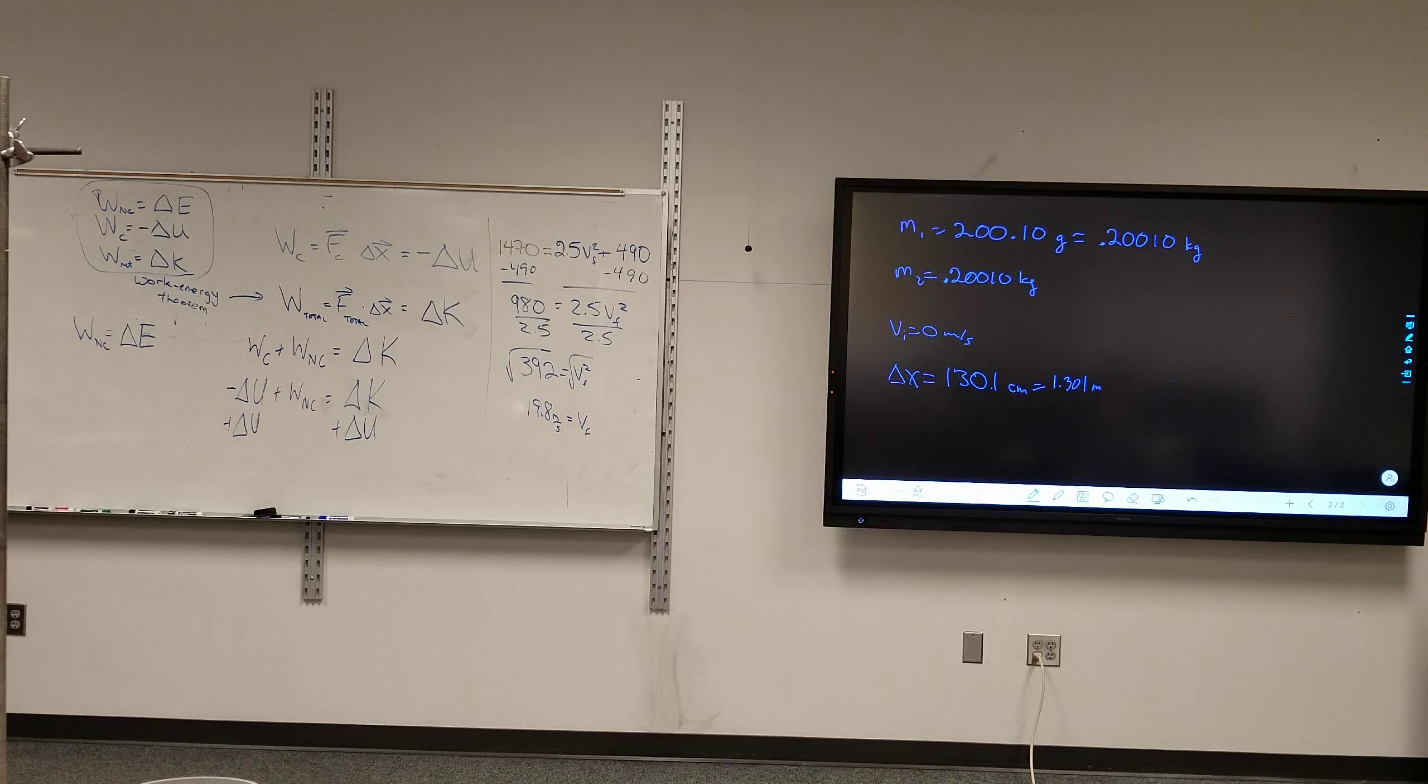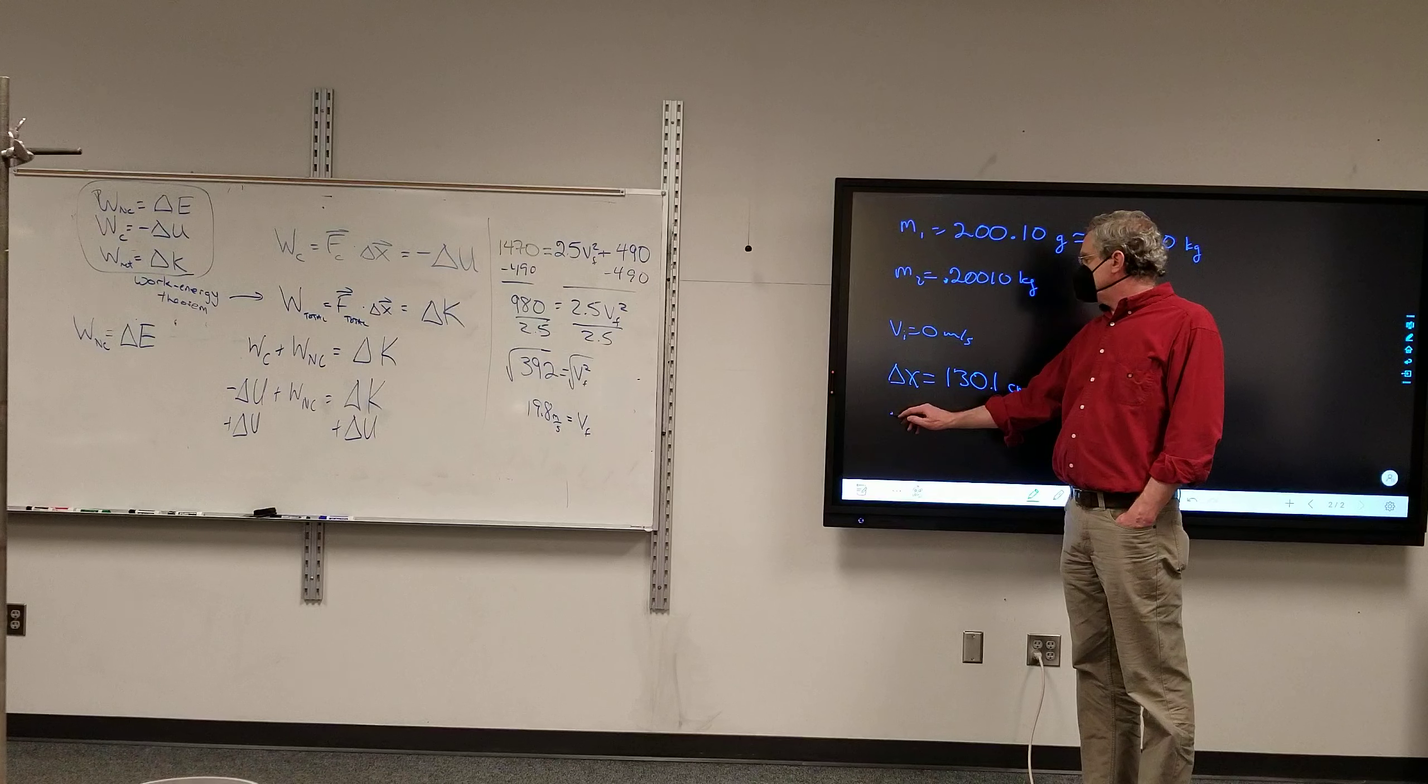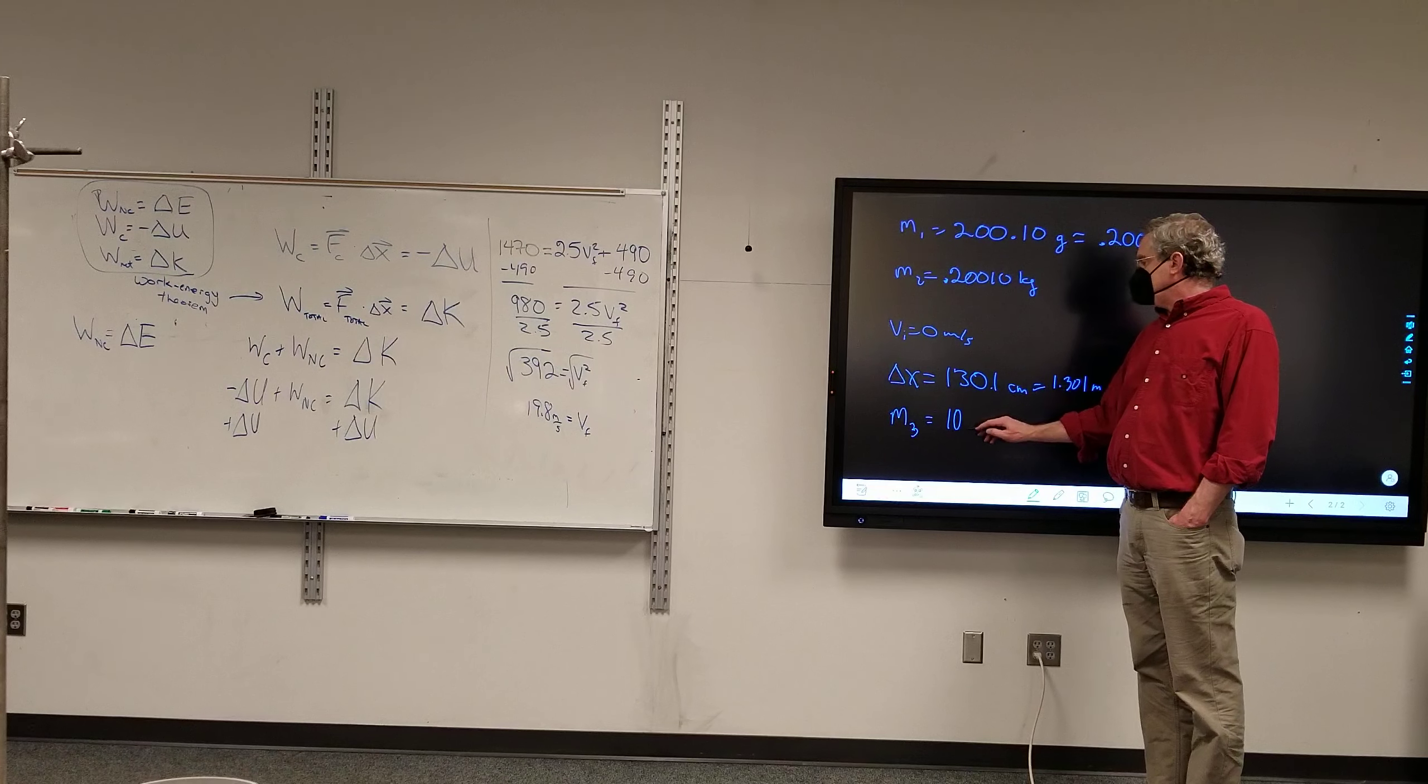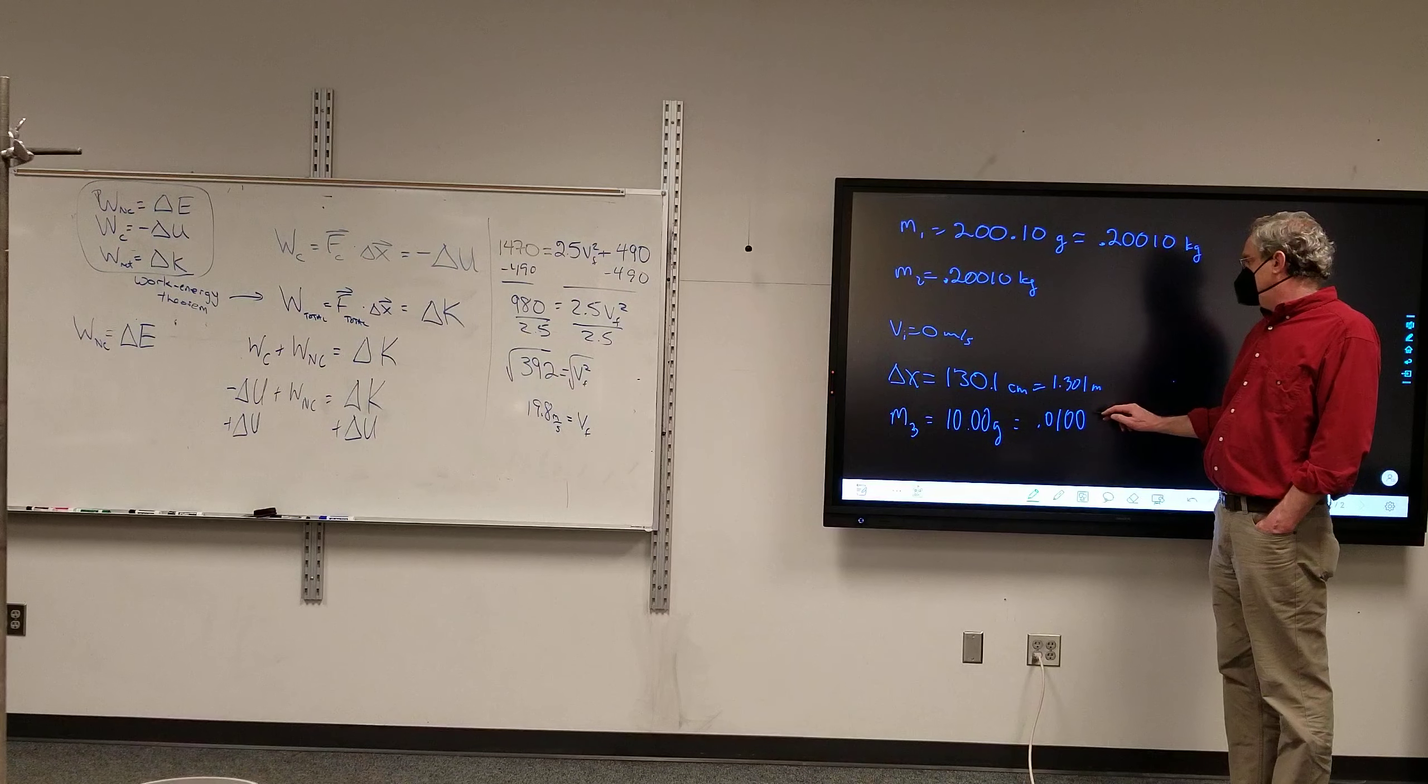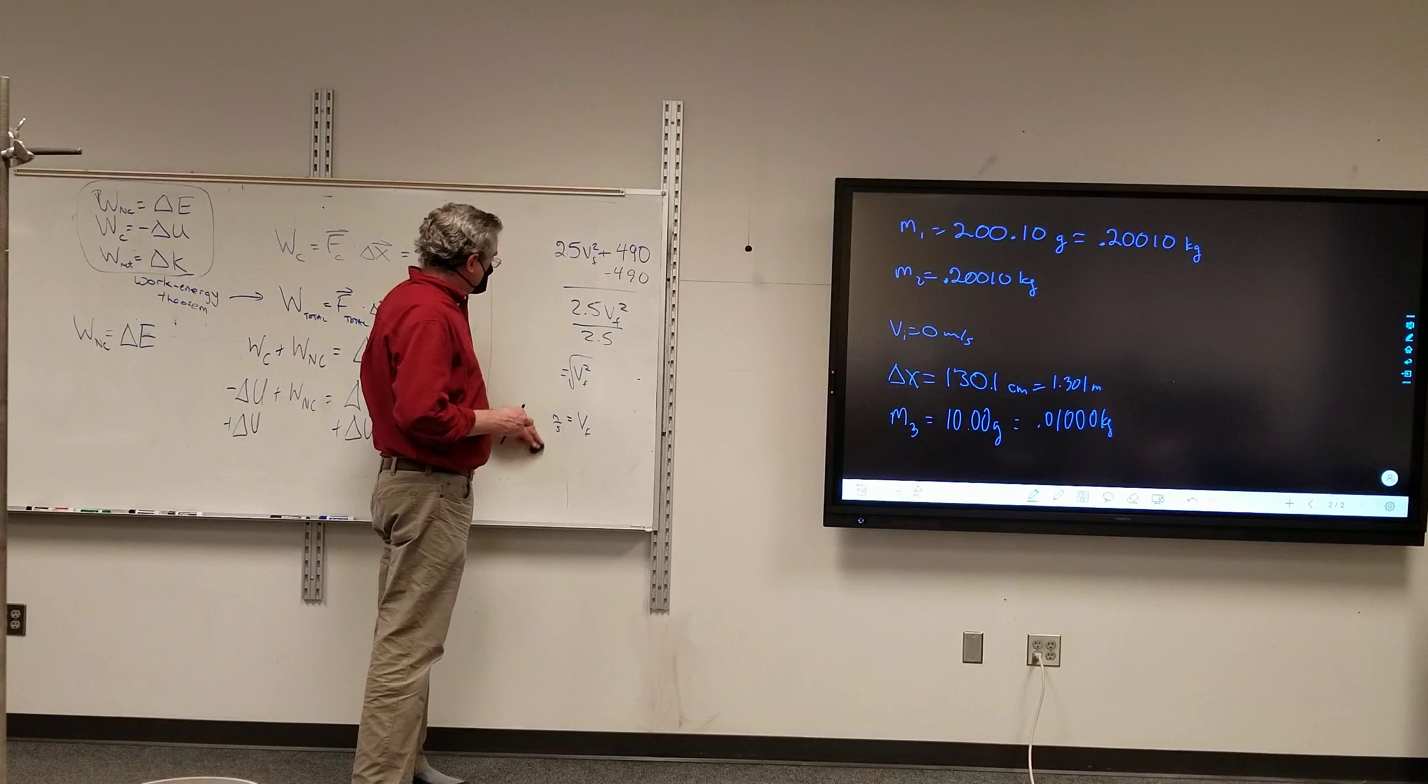We come back already in progress. So I've got the two masses there. I've got my additional speed. I know how far I'm going to move each. And I'm going to add m3, which was 10.00 grams or 0.0100 kilograms. Not a lot of change there, but it's enough. Should be enough. So let's make our prediction and then test it out.